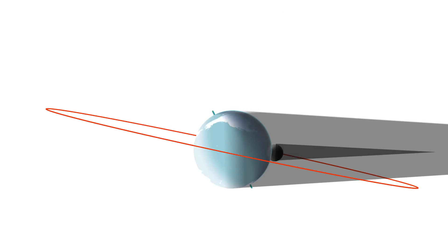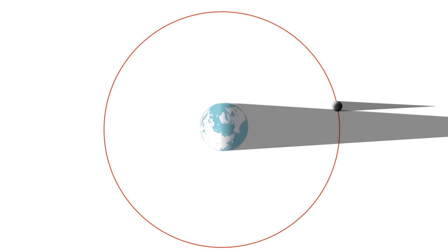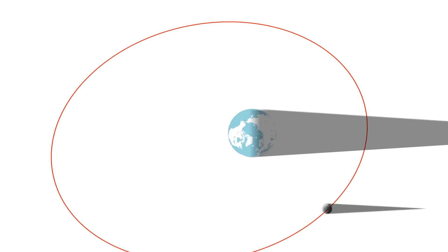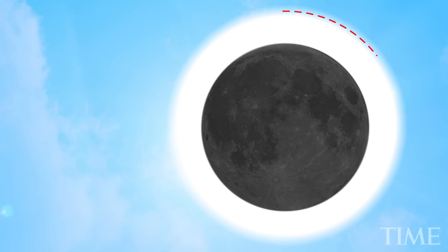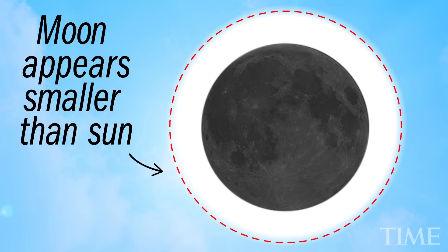But also because the Moon's orbit is elliptical. For much of its path, the Moon is farther away from Earth and appears too small to block out the Sun completely. These eclipses are called annular.